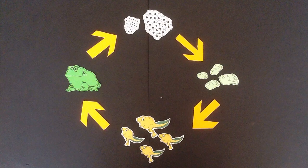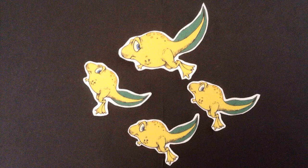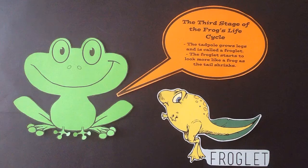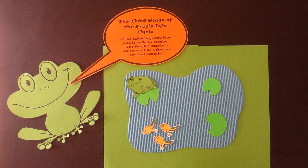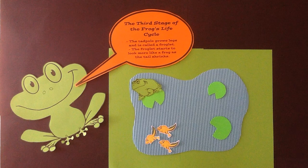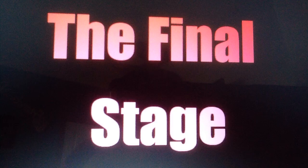The third stage of the frog's life cycle is when a tadpole turns into a froglet. When a tadpole grows arms and legs it is called a froglet. Between nine to twelve weeks, the froglet will begin developing these arms and legs. As the froglet starts to develop, the tail from the tadpole stage starts to shrink.